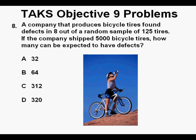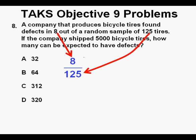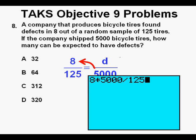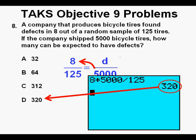Problem 8. A company that produces bicycle tires found defects in 8 out of a random sample of 125 tires. If the company shipped 5,000 bicycle tires, how many can be expected to have defects? This problem is a proportion. We set up 8 over 125 equal to D over 5,000. To solve for D, we cross-multiply: 8 times 5,000 divided by 125. Press Enter, and our answer is 320 defects. We circle our correct answer D.